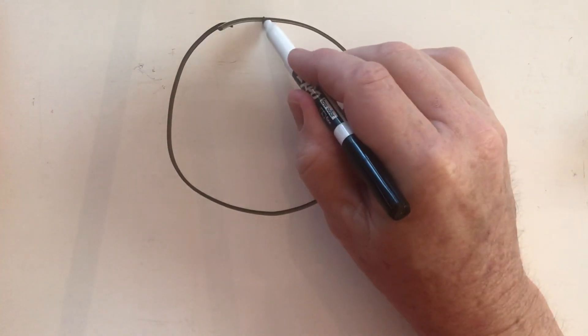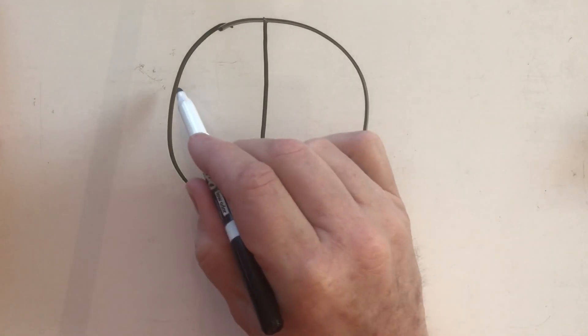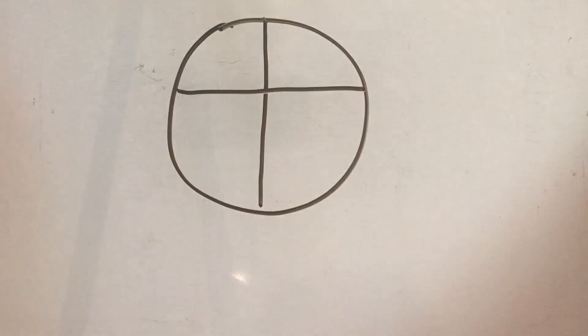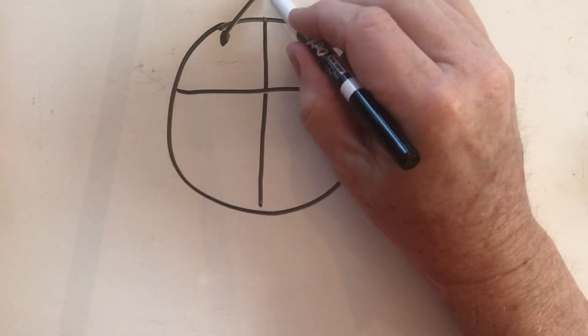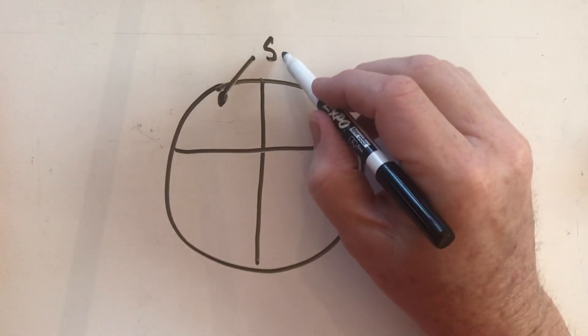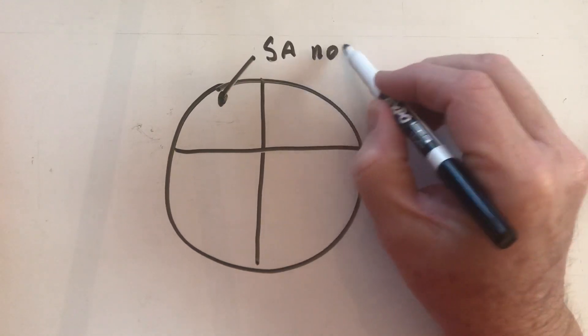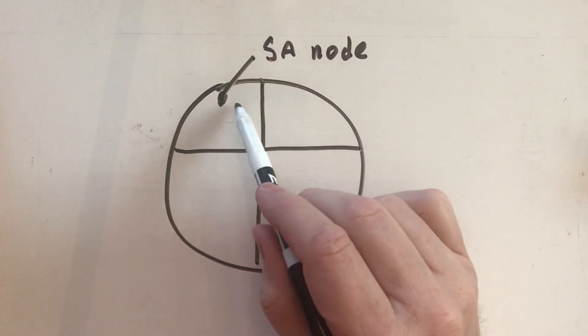We talked about how up in here in the heart we have our SA node. We said we have our SA node and what the SA node did is it sent signals out that caused the atria to contract.